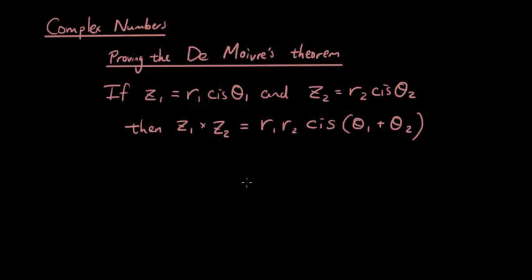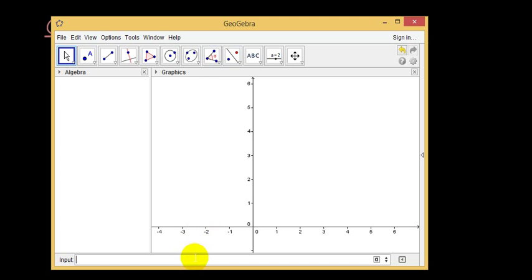I'll show you an example of this in GeoGebra so you know what I'm talking about. So I'm just going to draw two complex numbers in GeoGebra. Let's draw the first one as 2 plus 3i. So that's my first complex number. And then let's draw another complex number, call it 1 plus 2i.